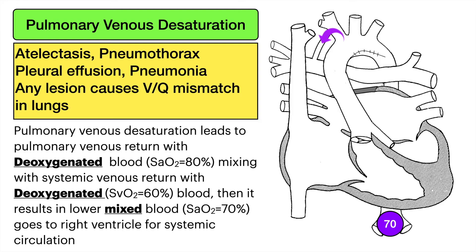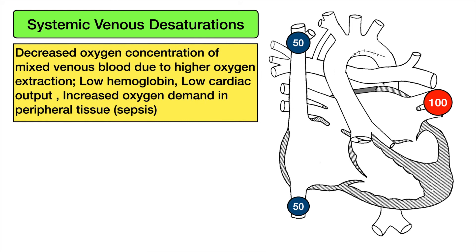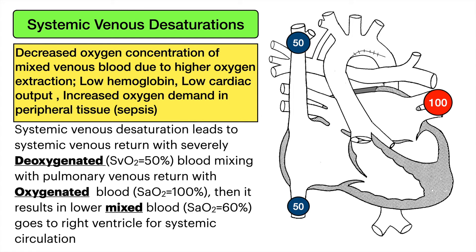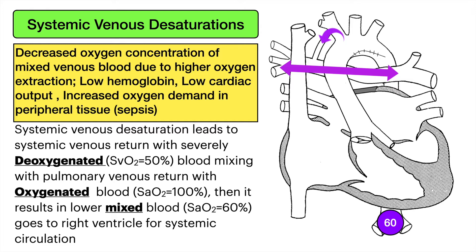Systemic venous desaturation occurs due to decreased oxygen concentration of mixed venous blood from higher oxygen extraction, low hemoglobin, low cardiac output, or increased oxygen demand in peripheral tissues such as in sepsis. This leads to systemic venous return with severely deoxygenated blood at sat 50% mixing with pulmonary venous return at sat 100%, resulting in a lower mixed sat of 60%, which becomes the systemic arterial saturation.